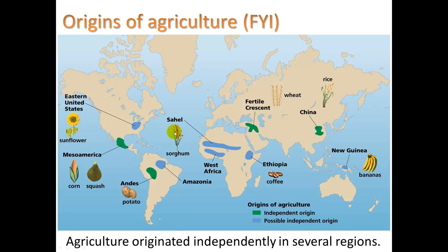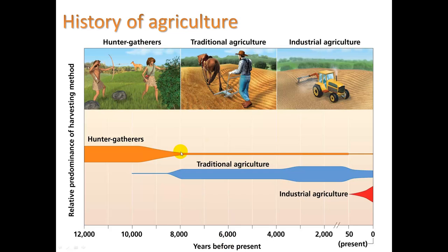A little FYI about the origins of agriculture. From archaeology, we know that the areas shown in green are where agriculture developed independently, while other areas may be possibly independent or related to those regions. The important point is that it originated independently in several different regions. The history goes: hunter-gatherers going back 10,000 to 12,000 years ago, then traditional agriculture practiced for several thousand years, and most recently — in the last 50 to 100 years — industrial agriculture.